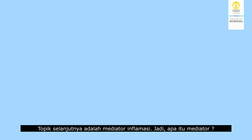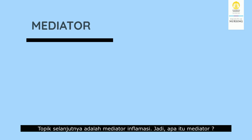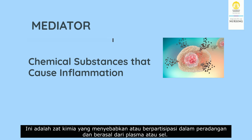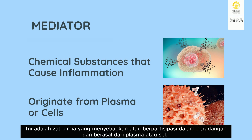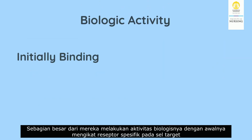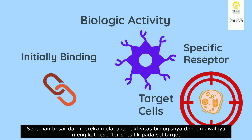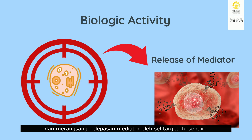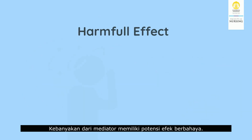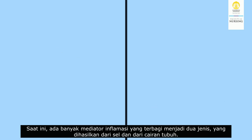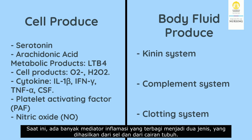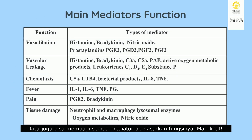The next topic is inflammatory mediators. These are chemical substances that cause or participate in inflammation, originating either from plasma or cells. Most of them perform their biological activity by binding to specific receptors on target cells and stimulating the release of further mediators by target cells themselves. Most mediators also have potentially harmful effects. Mediators for inflammation are divided into two types: those produced from cells and those from body fluids. They can also be classified based on their functions, as shown here.